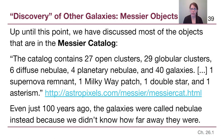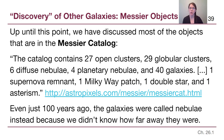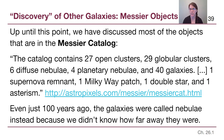Up until this point in the semester we've discussed most of the objects in the Messier catalog. We talked about the two different types of star clusters back in chapter 22. Diffuse nebulae, emission nebulae, dark nebulae, and reflection nebulae came up in chapter 20. Planetary nebulae came up when we talked about how low-mass stars die — they puff off their outer layers. Four of those are visible with a low-powered backyard telescope in the Messier catalog. And then there are 40 galaxies.